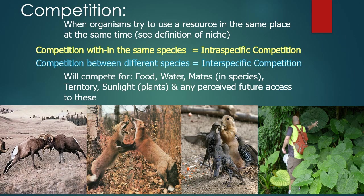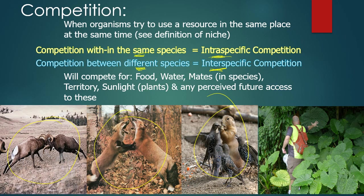Our next term is competition. This is when organisms try to use a resource at the same time and in the same place. There are two subtypes: intra-specific competition and inter-specific competition. Intra-specific is competition within the same species — for example, these rams or foxes here. Inter-specific competition is between different species. Competition can be for anything: food, water, mates — that's only an intra-specific competition — and territory, also an intra-specific competition.